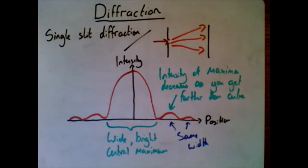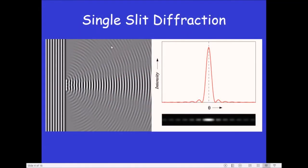Here is a slightly better version, also more to scale. There are three different representations: on the left you can see — imagine looking from above at waves going through a single slit — the pattern you would see. The graph at the top shows that wide bright central maximum and then much lower intensity maxima further out. Underneath that is a picture of what this would actually look like in reality.